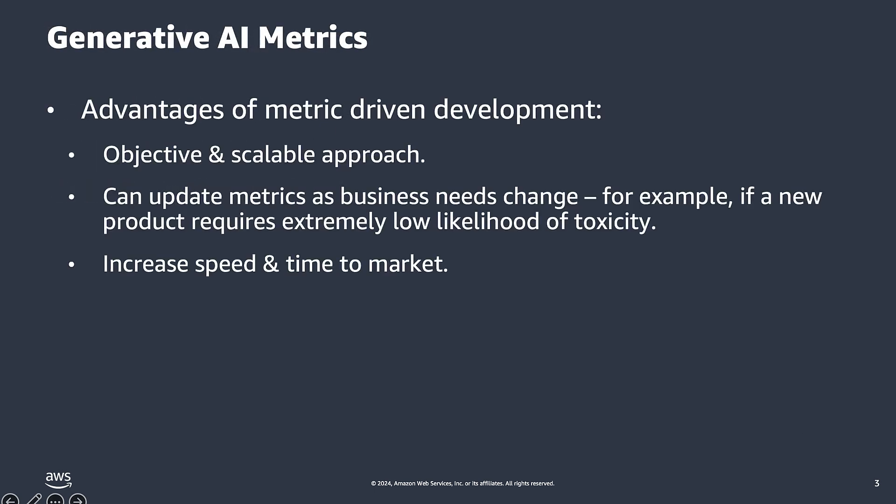We advocate a metrics-driven approach to LLM system evaluation. There are many advantages of metrics-driven development. Just as automated testing in software development provides objectivity, speed, and reduces time to market, Gen AI metrics serve a similar function. They are an objective approach — given a ground truth and test data, we only change one variable at a time, for example chunk size, embedding model, or large language model. Metrics can change as business needs change, for example if a new product requires extremely low likelihood of toxicity. You can increase speed and time to market by running an automated test suite much faster than manual testing, and this automated test suite's coverage can be more comprehensive.